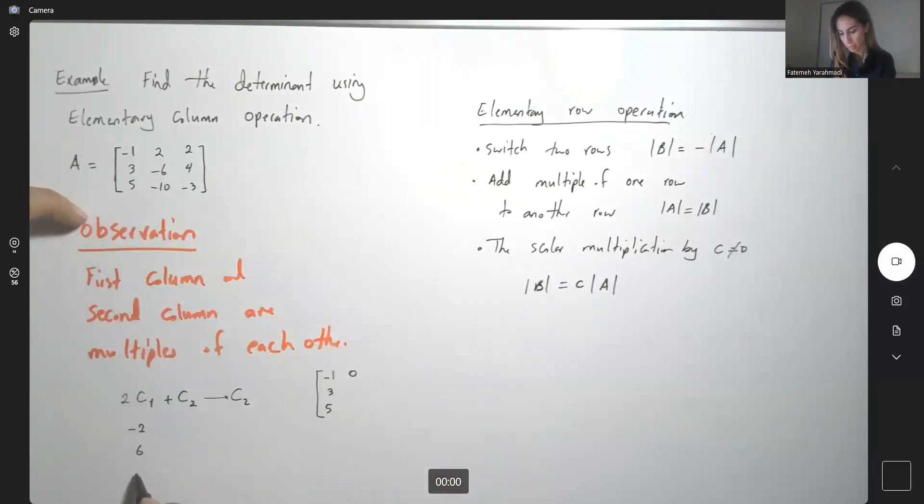So you have negative 2, you have 6, you have 10 added to 2, negative 6, and negative 10. And this guy becomes 0, 0, and 0.